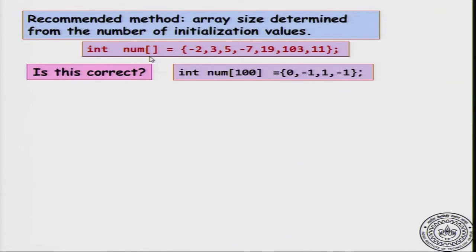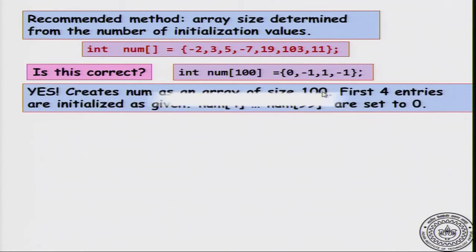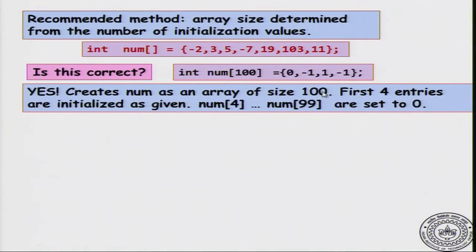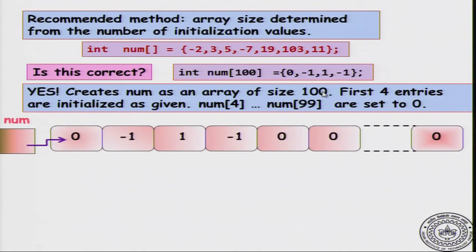Now, is the following code correct? If I declare an array of size 100 num and give 4 initial values. This is correct. It creates num as an array of size 100. The first 4 entries will be initialized as given. Num[0] will be 0, num[1] will be -1, num[2] will be 1, num[3] will be -1 and then num[4] until num[99], they are all set to 0. After the initialization, the array will look as follows. The first 4 values are what we given and the remaining values are 0.